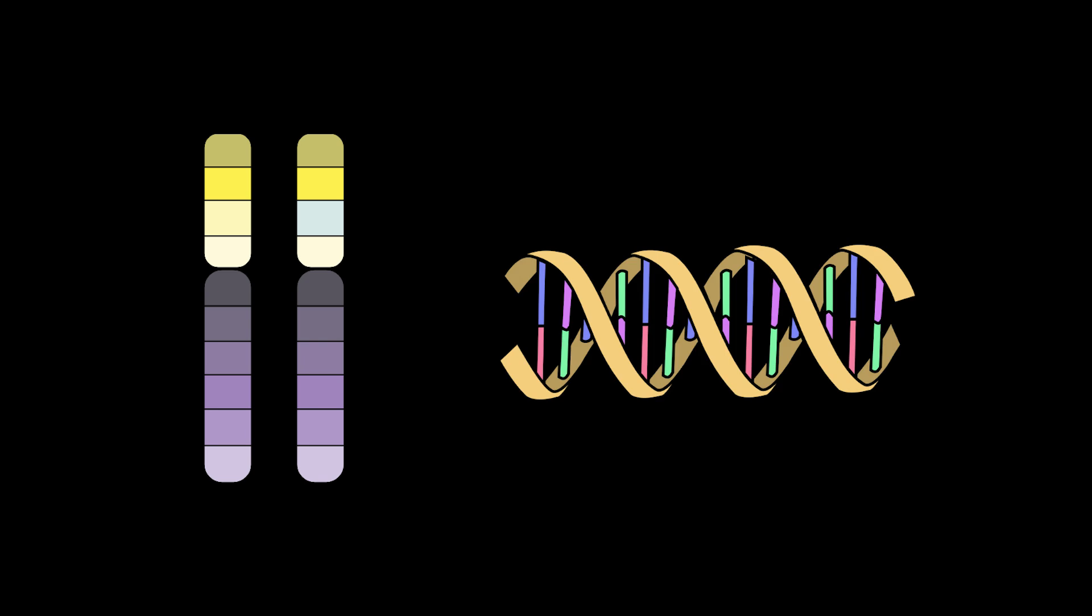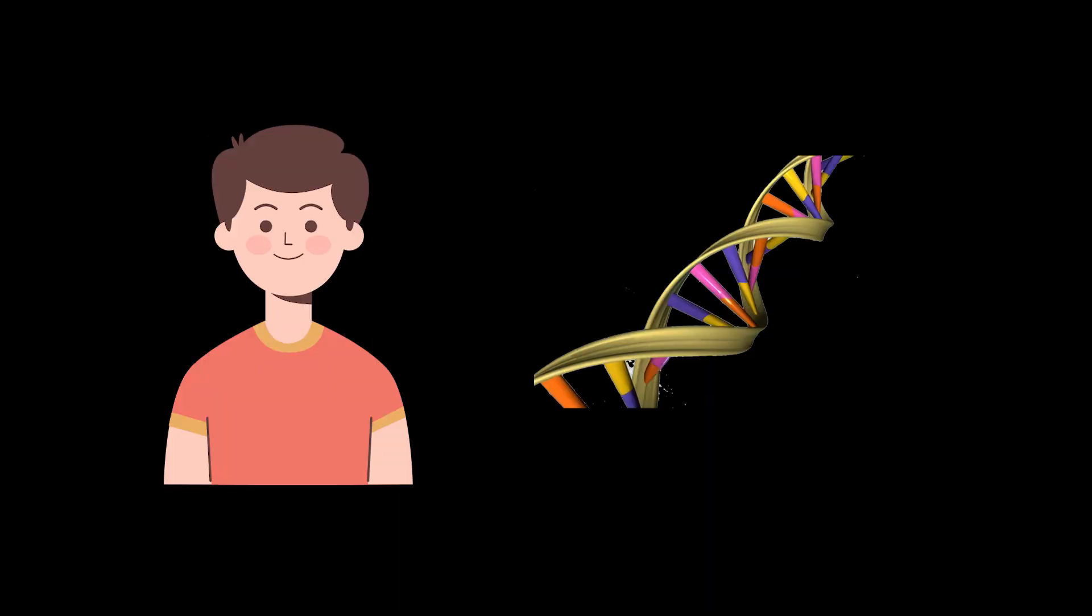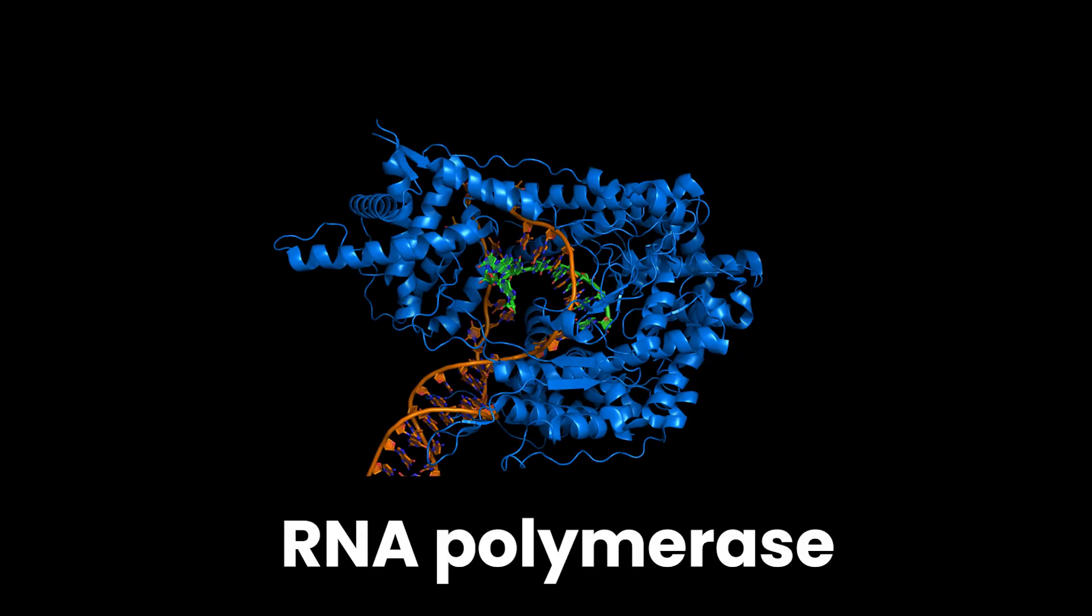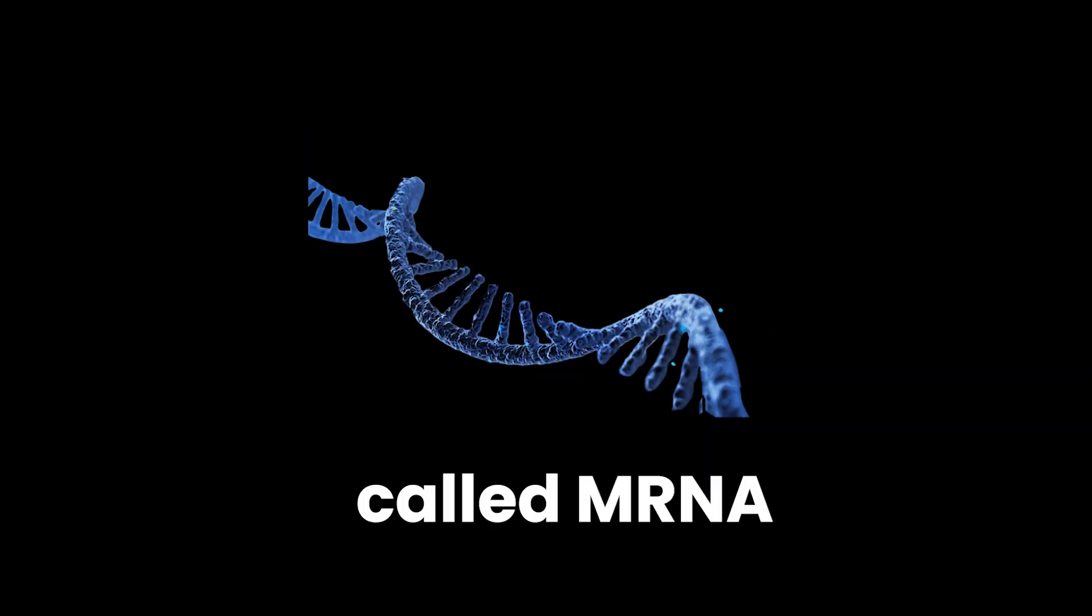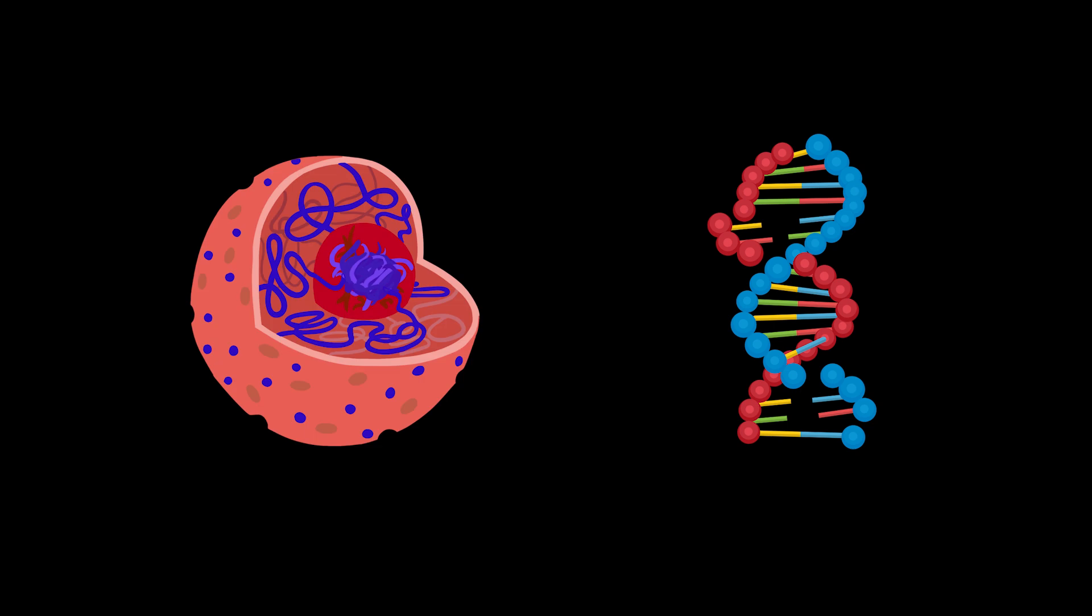This combination of alleles is your genotype. The result, the trait you see, is your phenotype. Now, how does DNA actually turn into something physical? Through a simple two-step process, transcription and translation. Step 1. Transcription. Inside the nucleus, an enzyme called RNA polymerase copies a gene's DNA sequence into a molecule called mRNA, Messenger RNA. Think of mRNA as a photocopy of the gene that can leave the nucleus.